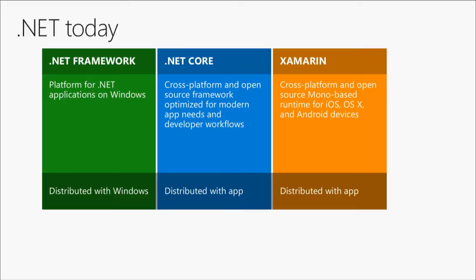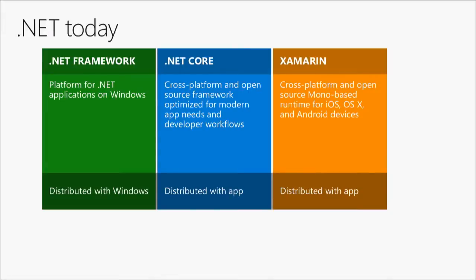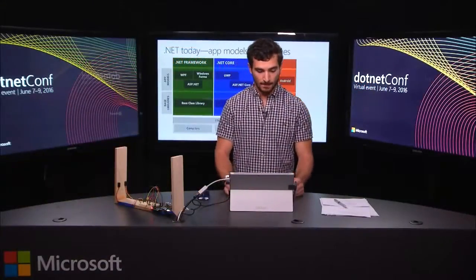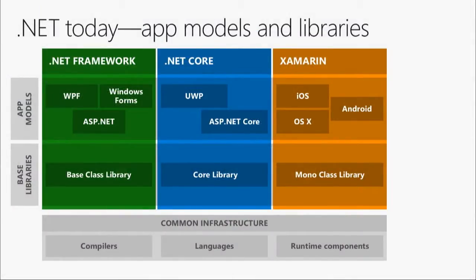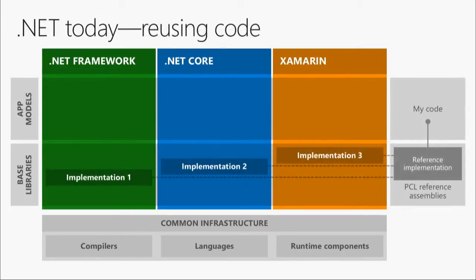Each of these frameworks is a little bit different. The traditional .NET framework shipped within the operating system, meaning customers needed to have the right version installed. With .NET Core and Xamarin, the framework is shipped app-locally — inside your application — allowing you to innovate much faster. As soon as a new version is released, you can take advantage of it immediately. We tackled code reuse with the concept of portable class libraries, where reference implementations of the .NET base class libraries let you write shared code across frameworks.